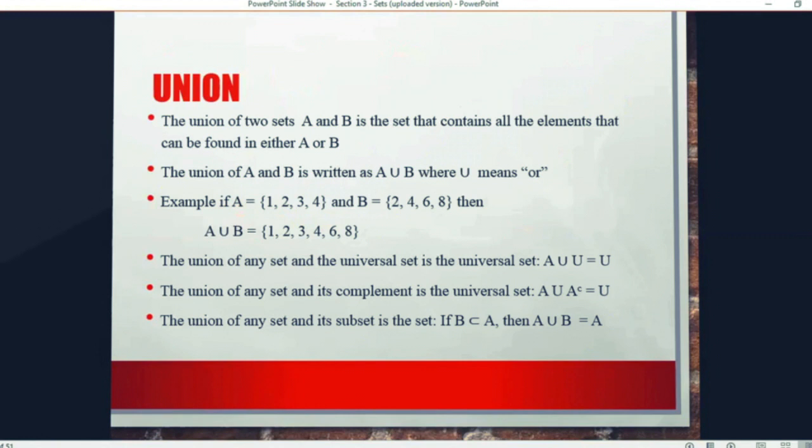The symbol for union is a U, right? It looks like a U. And if you're reading it, this means A or B. The union of A and B is represented as A, this U-looking symbol, B.